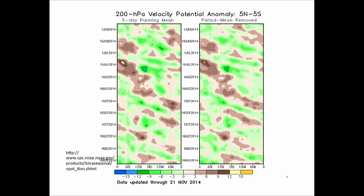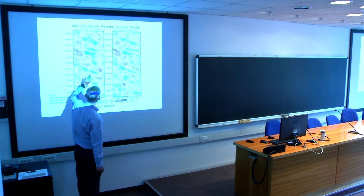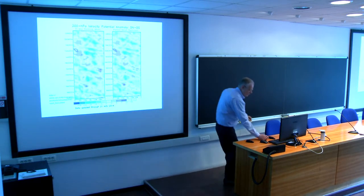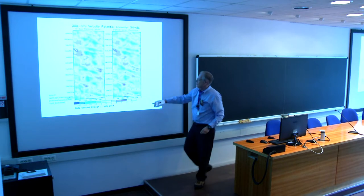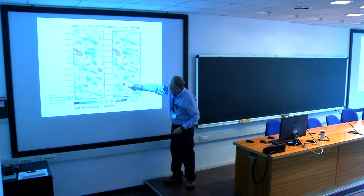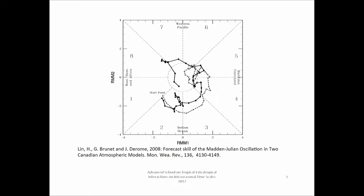You do lose some of the detail of the real data in doing that. This is the velocity potential — taken straight from the Climate Prediction Center's website — where negative means tropical convection. When you do this EOF reduction, it's the standard RMM1 and RMM2 indices. Even though in the real data you see blobs moving, this has been reduced to something much lower-dimensional: an oscillation with an amplitude and a phase.